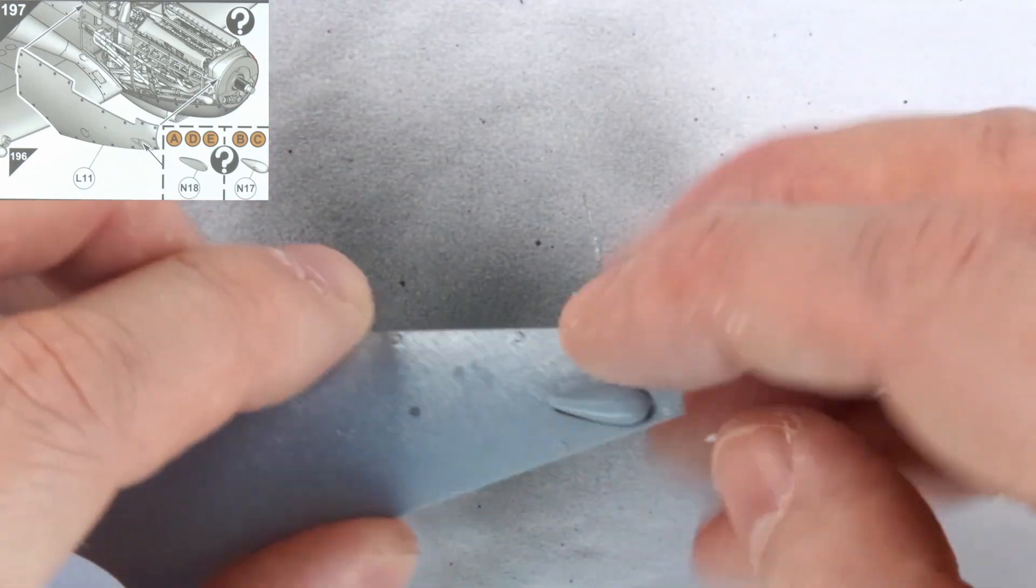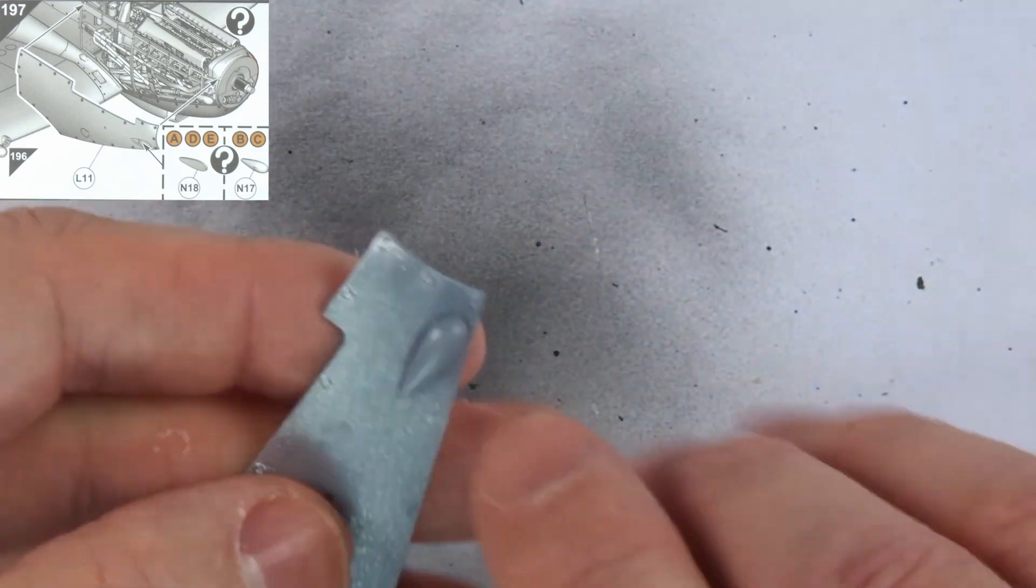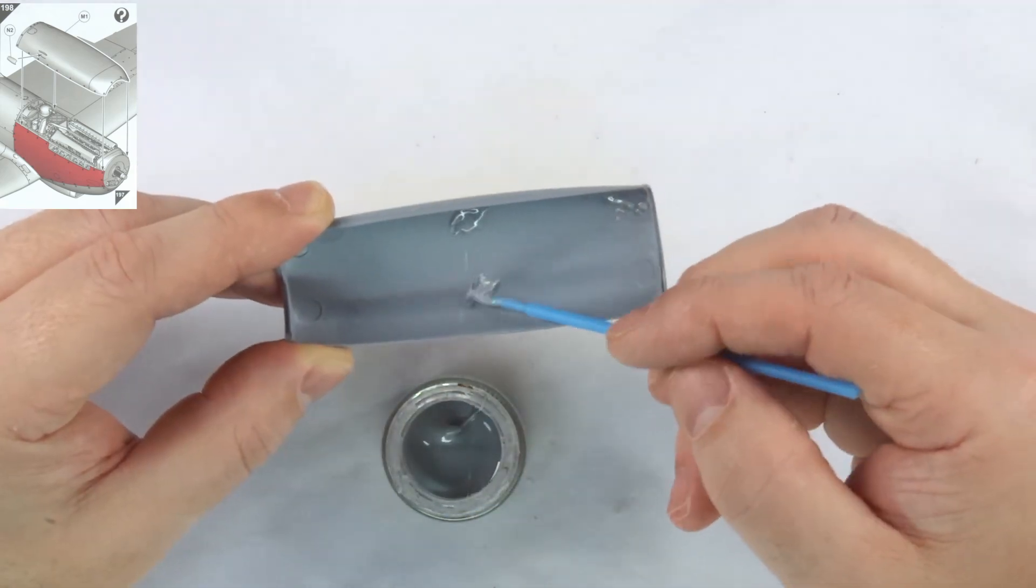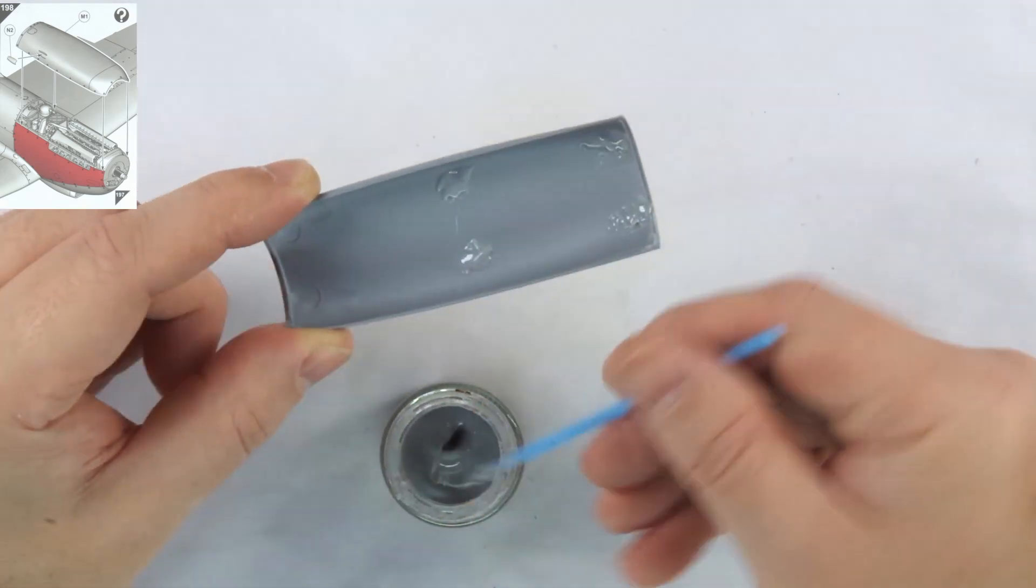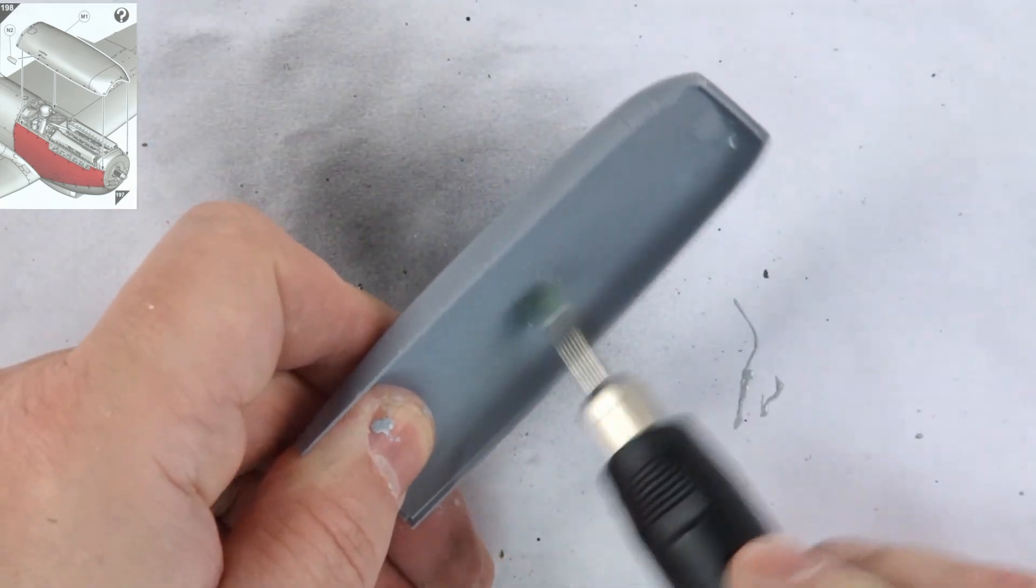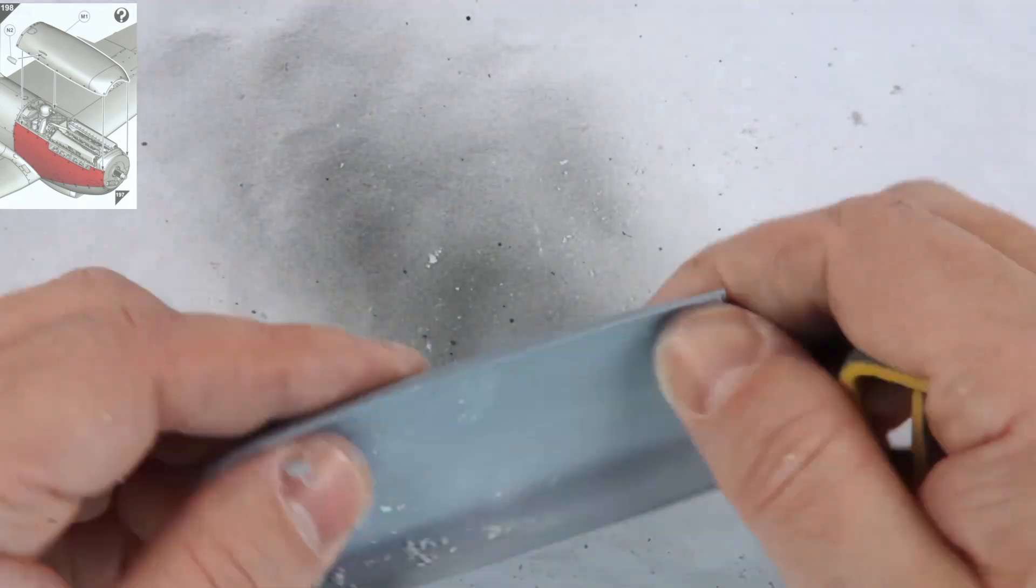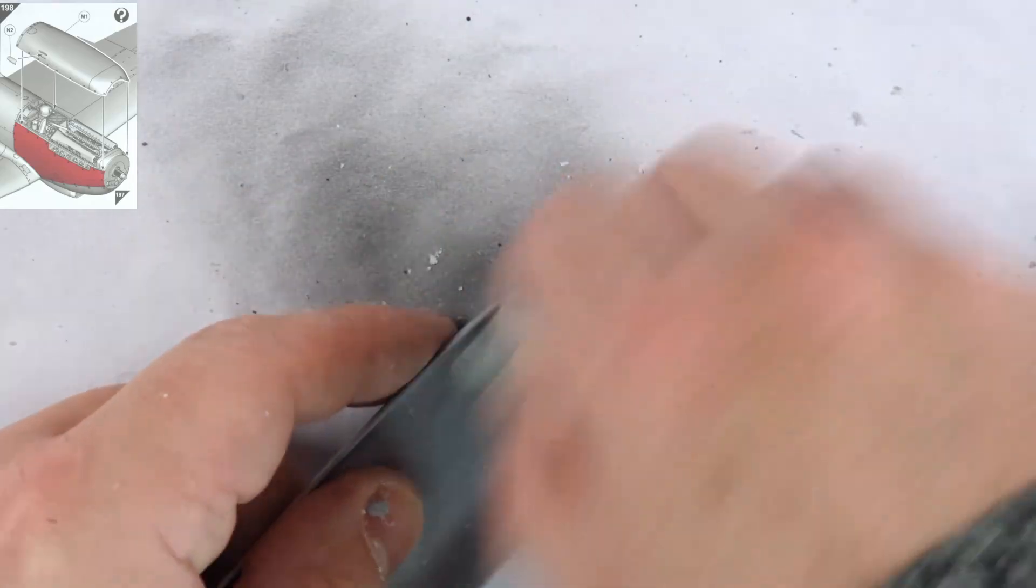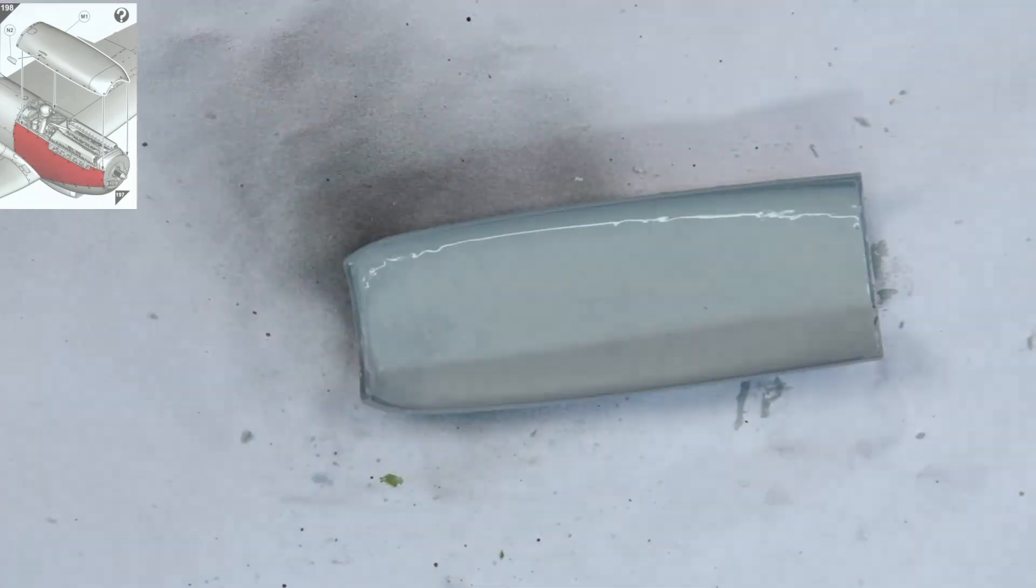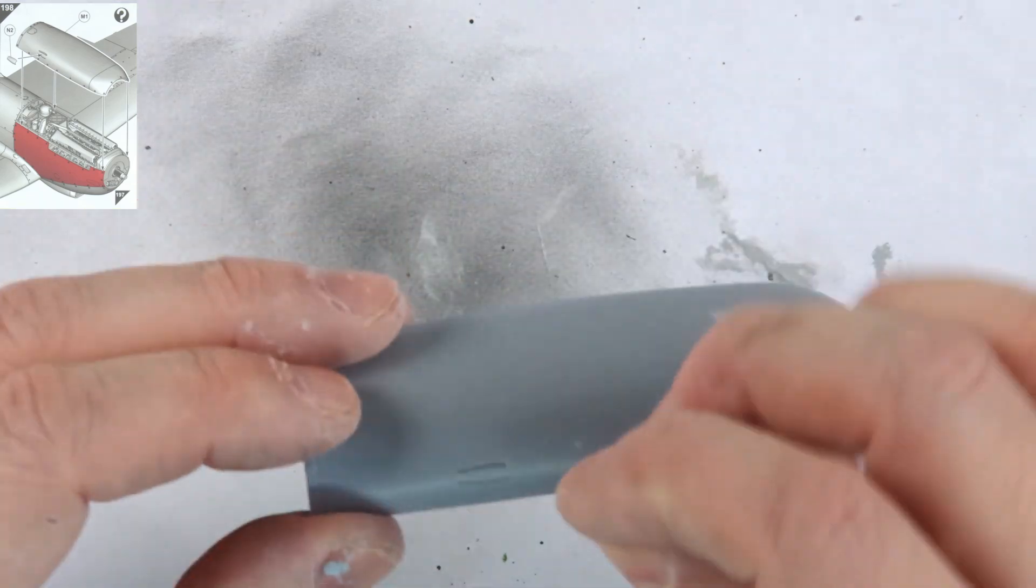Step 197 has us attaching the bulged cover to the starboard cowling, and I did the same cleanup on the inside of this part too. Step 198 deals with the previously missing nose, which also needs the ejector pin sorting in the same manner as for the chin cowling. Last for this piece is the intake on the rear starboard of the cover, which goes on without any issues.